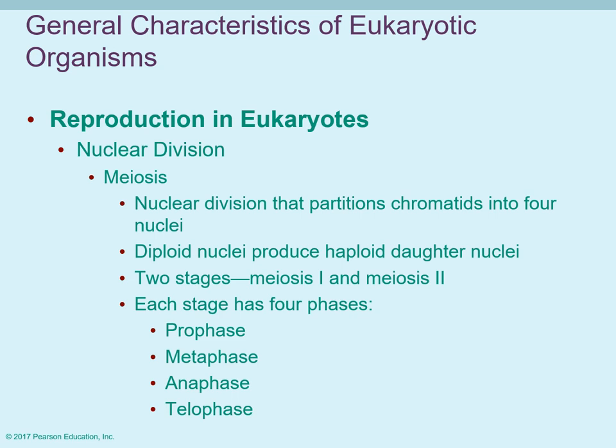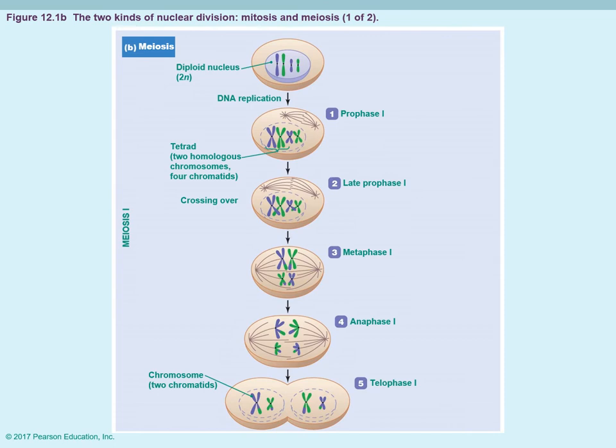With meiosis I and meiosis II, each stage has four phases: prophase, metaphase, anaphase, and telophase. We label them specifically as prophase I, metaphase I, anaphase I, telophase I for meiosis I, and prophase II, metaphase II, anaphase II, telophase II for meiosis II. This is so you can distinguish that metaphase II is different from metaphase I and different from mitotic metaphase.